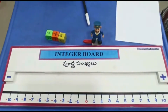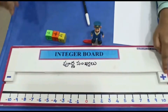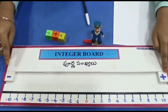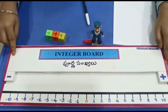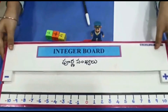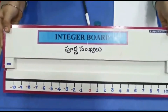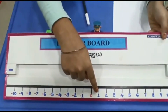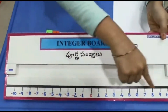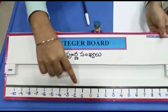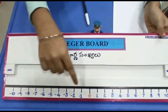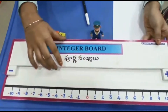Hi friends, today we are going to learn about addition and subtraction of integers using this integer board. This is called the integer board. I have marked positive numbers 1 to 10 and negative numbers minus 1 to minus 10 and 0 in the middle.